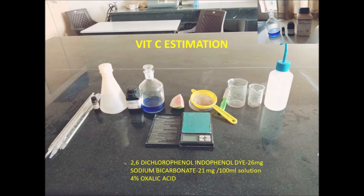We should macerate the sample to a fine paste in a pestle and mortar, then dilute it with 10 ml of 4% oxalic acid. After thoroughly mixing, we should filter it using Whatman number 1 filter paper. After filtering, we take only 0.5 ml of the filtrate into a 250 ml beaker.